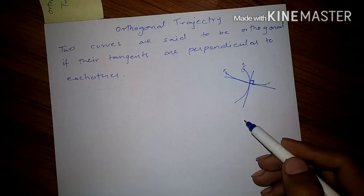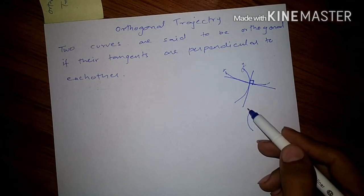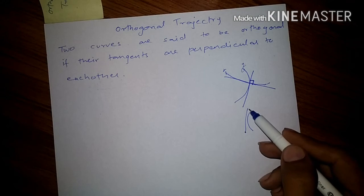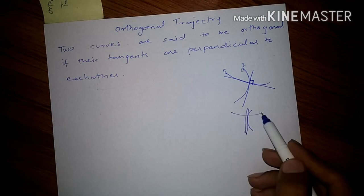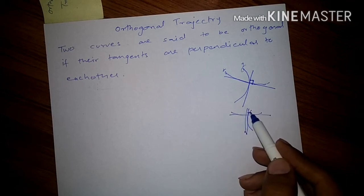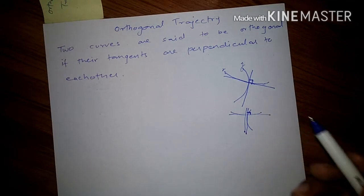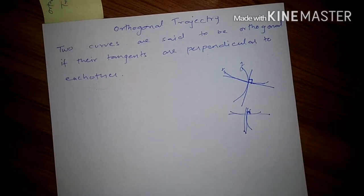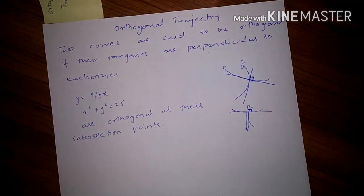Let's redraw it here. This is one curve and it has a tangent like this, and there's another curve which has a tangent like this. So basically where they meet perpendicularly, they are said to be orthogonal to each other.